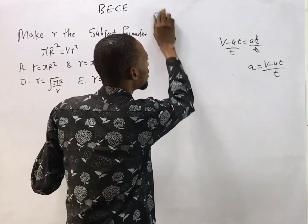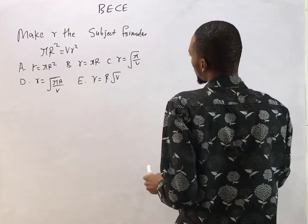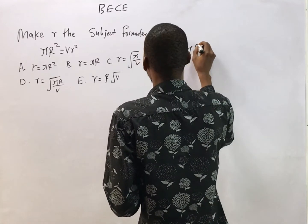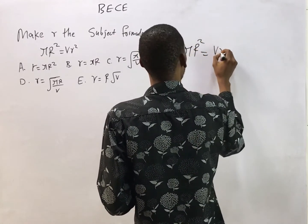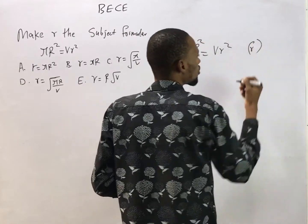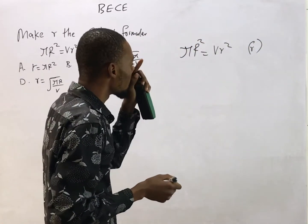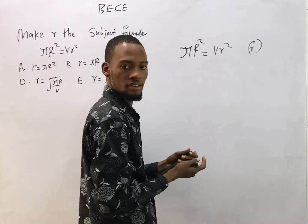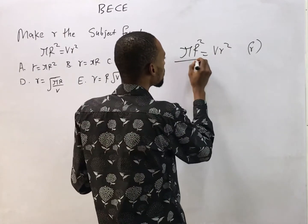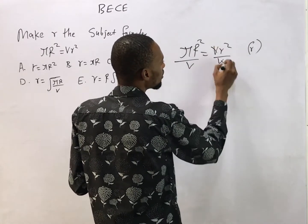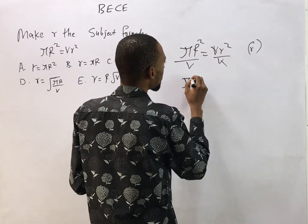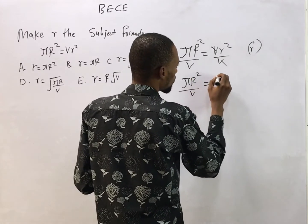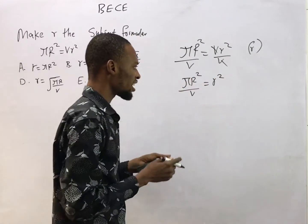Now look at this question before us: it says πr² = VR². We are making small r the subject formula, not big R. Dividing both sides by V: this over V and this over V — V divided by V cancels — so I'll be left with πr² over V equals R².